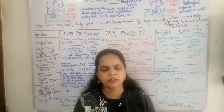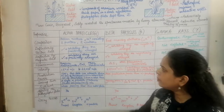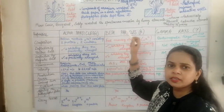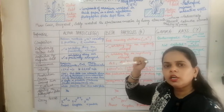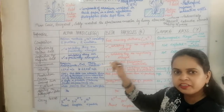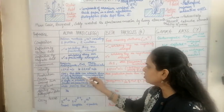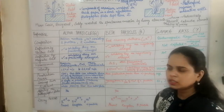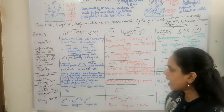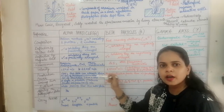Regarding penetration power: the alpha particle has low penetration power compared to beta particles because it is heavier. An aluminum foil of only 0.01 cm thickness can absorb alpha particles, and 7 cm of air can stop a fast-moving alpha particle. Beta particles have greater penetration power due to their smaller mass and higher velocity.